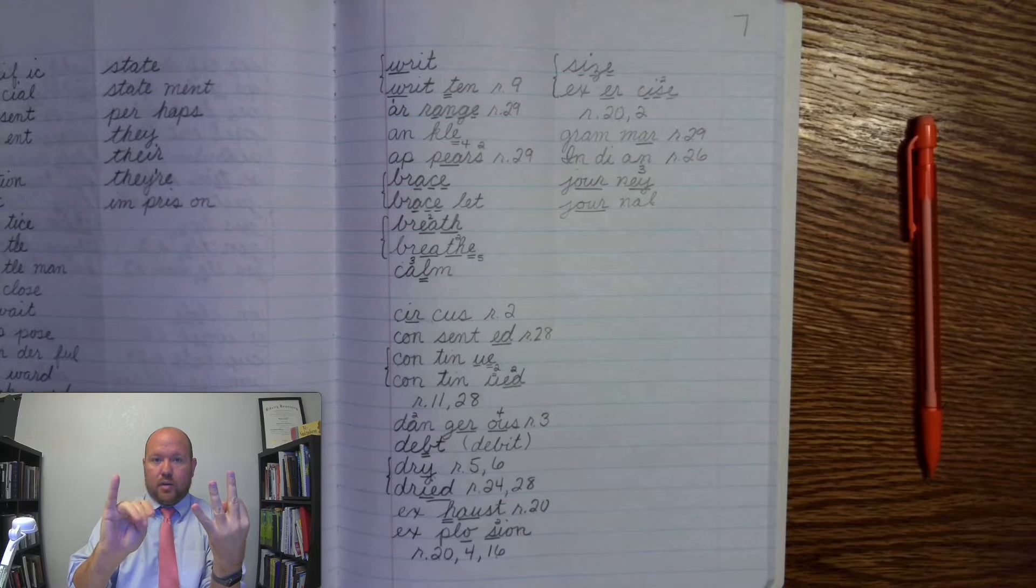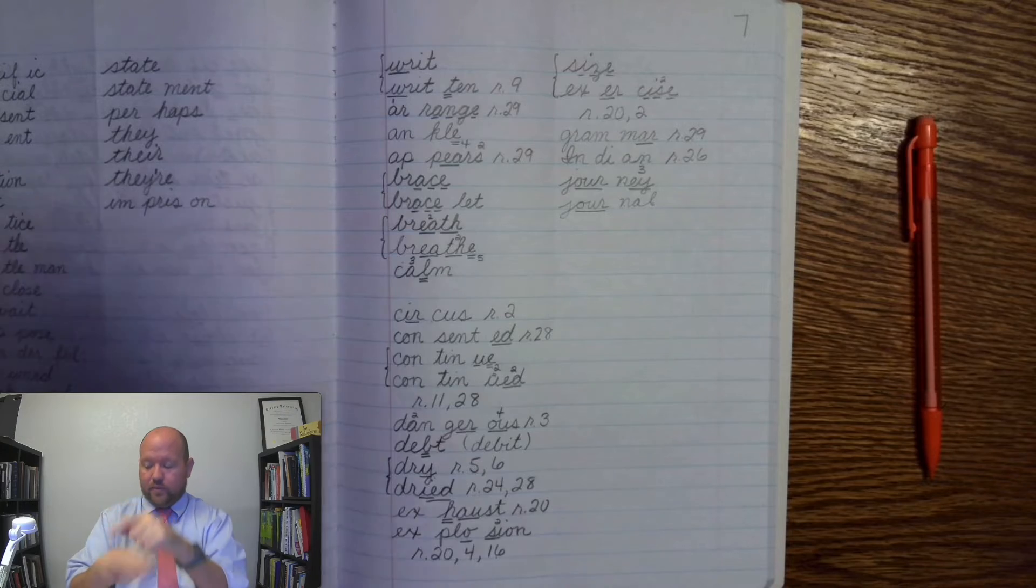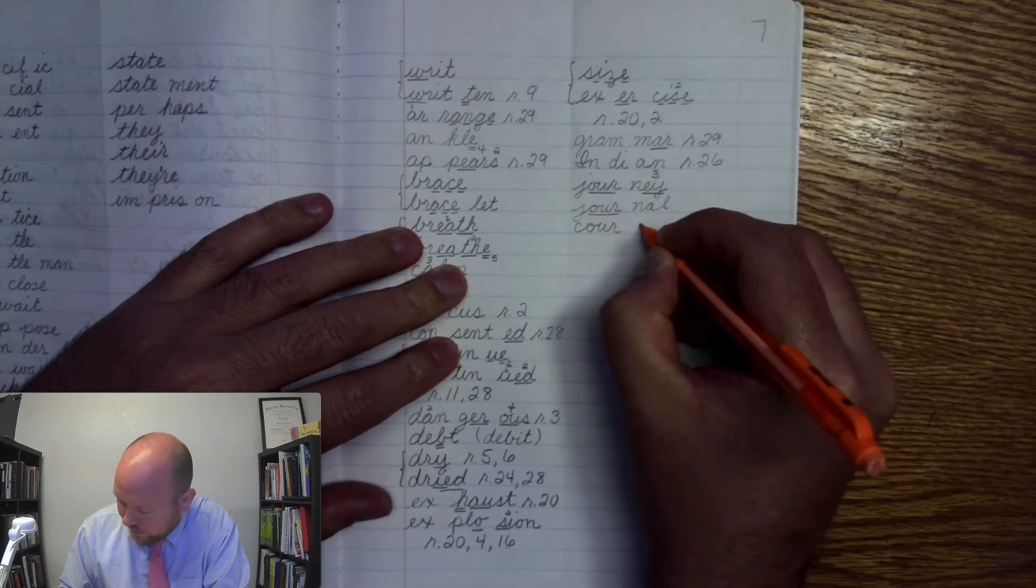So, we're using that same ur. The O-U-R, ur. And we're using a C to make kuh. Right? Courage. Cur, age.